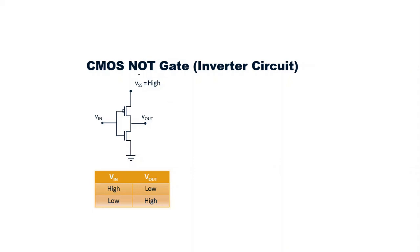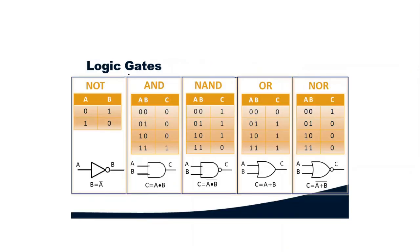We can design gates using CMOS devices and CMOS technology. The NOT gate is actually the inverter: when the input is zero the output is going to be one, and when the input is one the output is going to be zero. Zero indicates low and one indicates high — it basically inverts the input. This is the NOT gate.